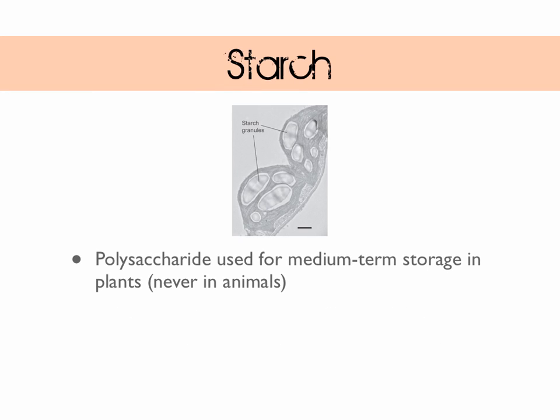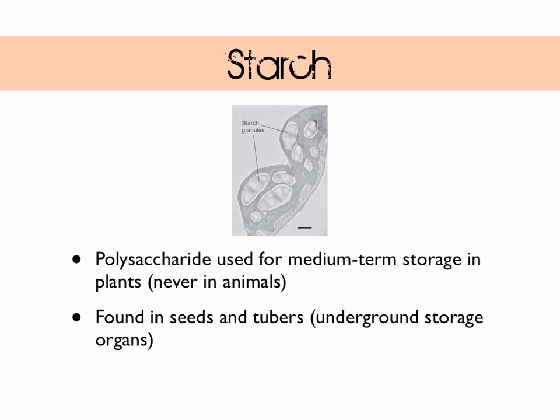Starch is a polysaccharide used for medium term storage in plants - it's never found in animals. Medium term storage means it's not going to be used up straight away but at some point if the plant requires it, it needs to be broken down into alpha glucose that can be used. Starch is found in seeds and tubers - tubers are underground storage organs, like potatoes.